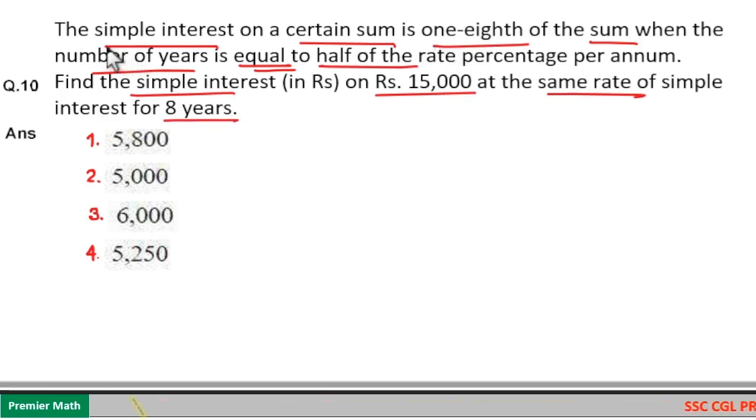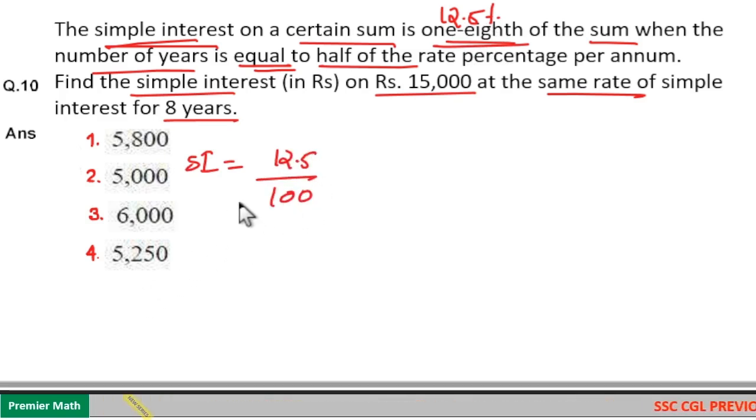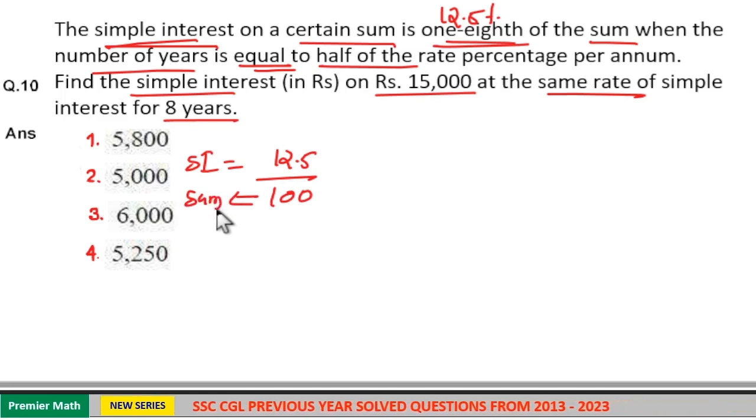Here, simple interest is one-eighth of the sum means 12.5 percentage. That is one-eighth is 12.5 percentage. So here, simple interest is 12.5 percentage means if 100 rupees is the sum, 12.5 rupees is the simple interest generated at the end of one year.